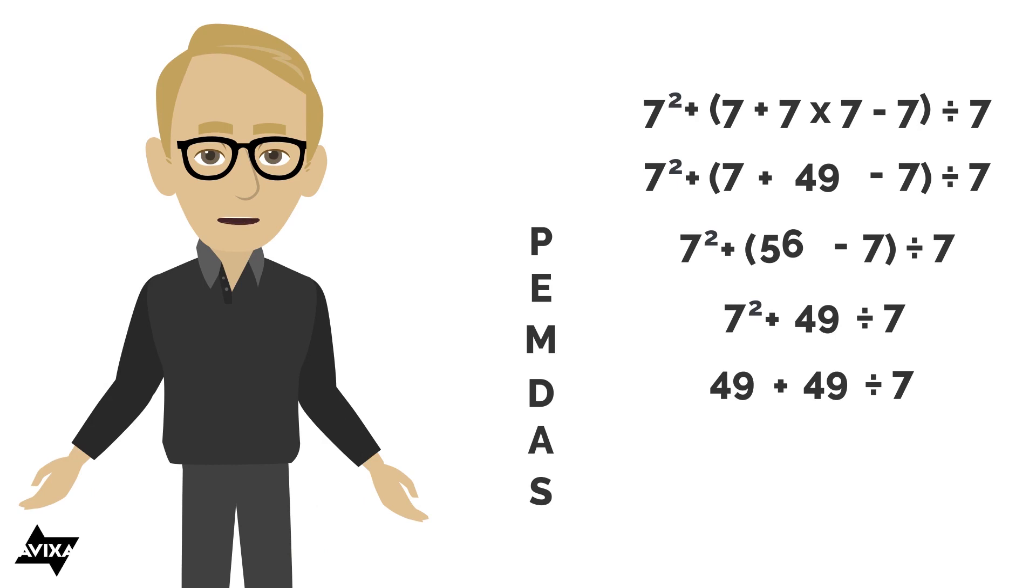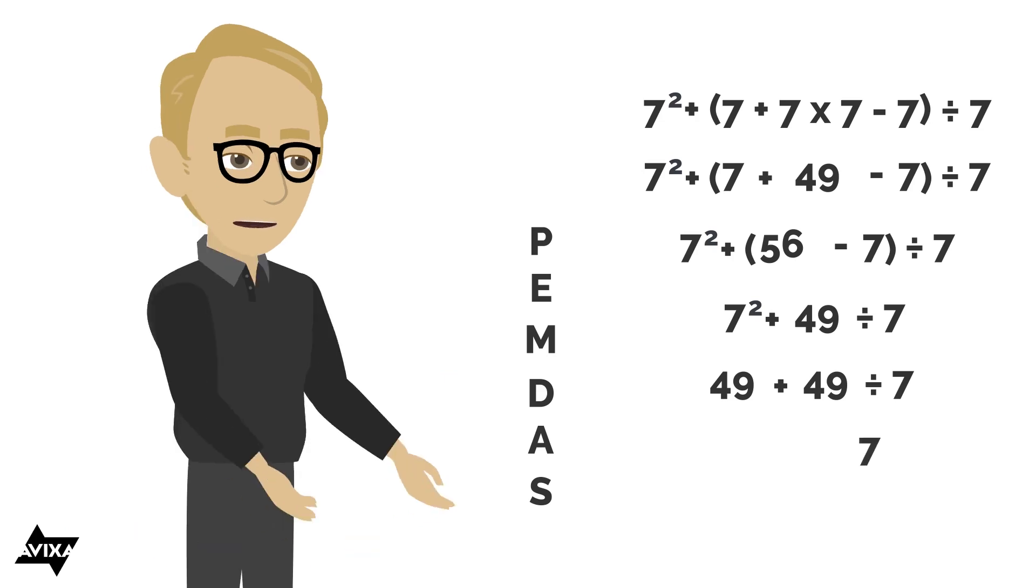Still multiple operations, but I have addition and I have division. Which of these do I do first? I do the division before I do the addition. So 49 divided by seven is going to be seven.